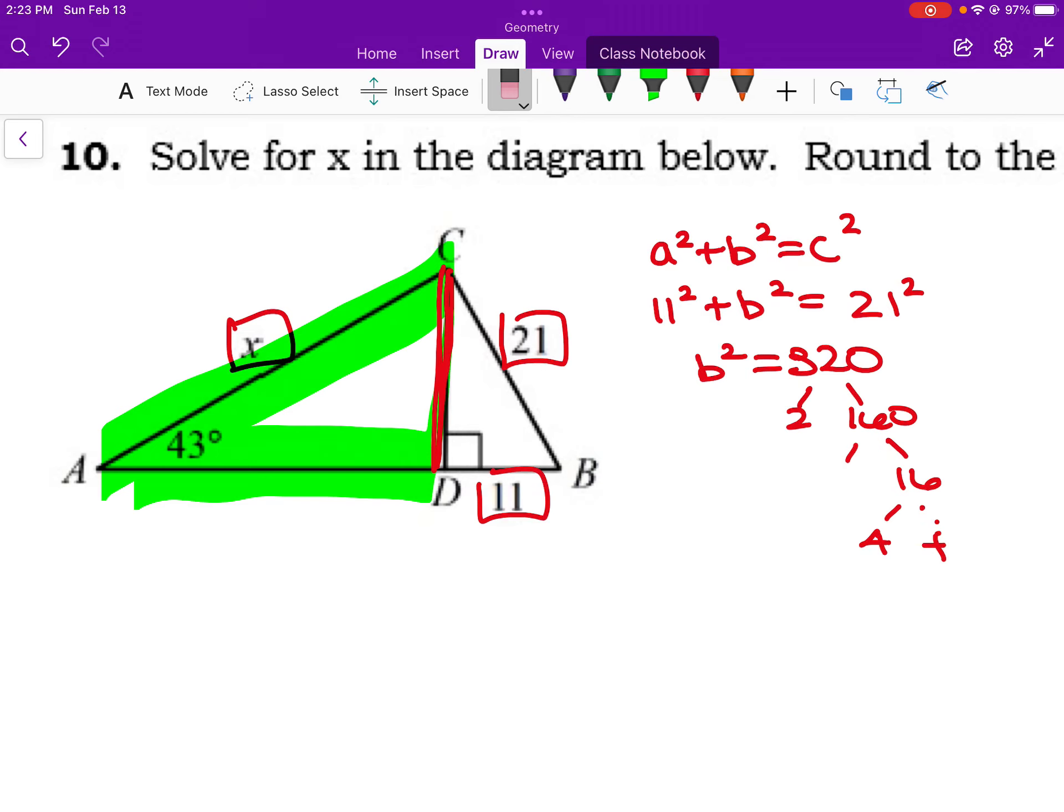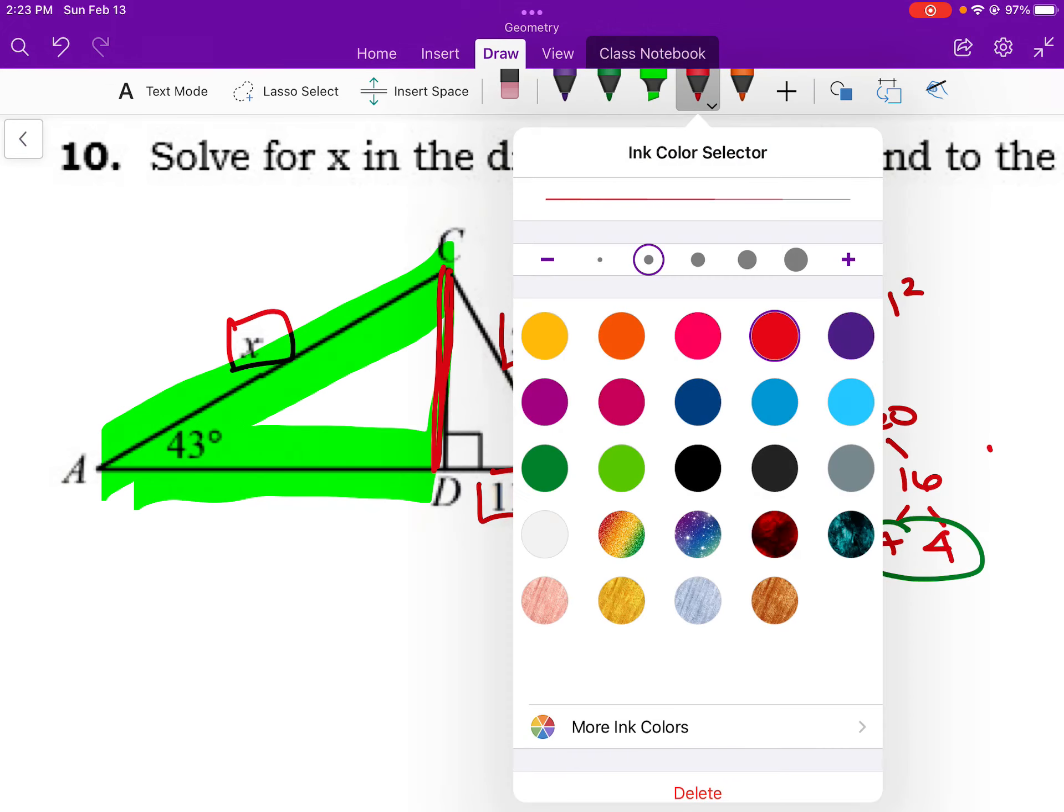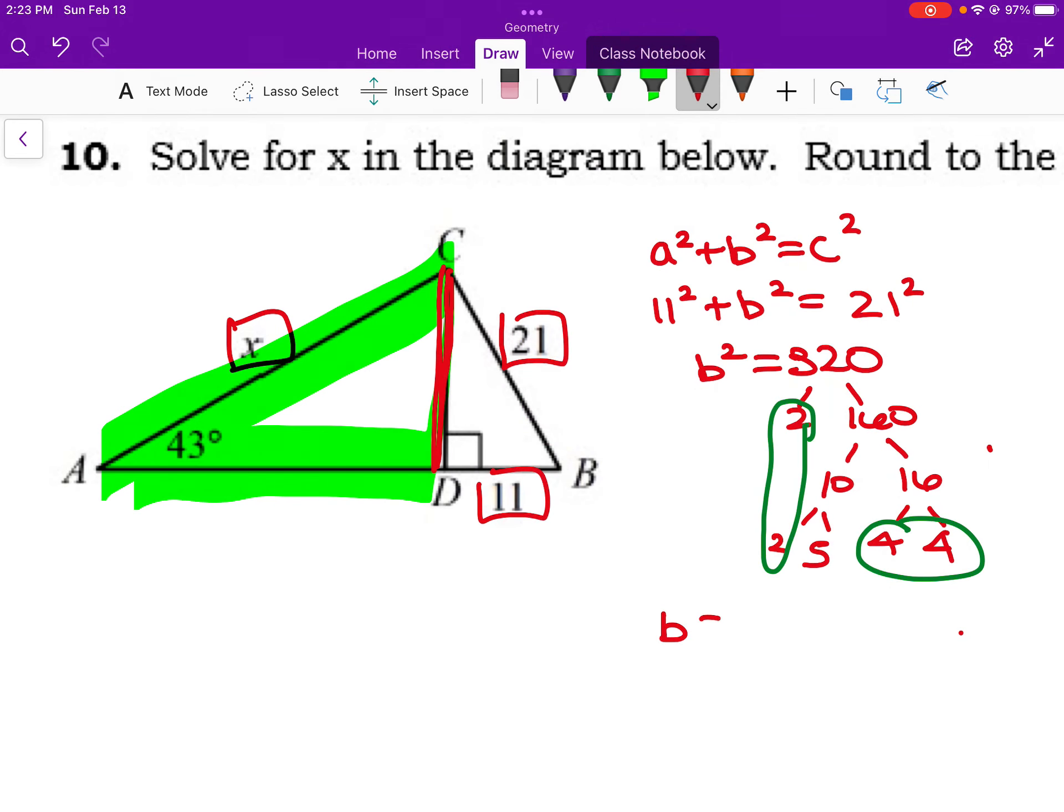That's 4 and 4 here. But my 10 breaks into 2 and 5. And remember when we're doing square root simplifications, we're looking for pairs. So I have a pair of 2s, pair of 4s. So I would say that b equals, I pull out a 2, I pull out a 4, I have a 5 remaining. So that would be 8 root 5.